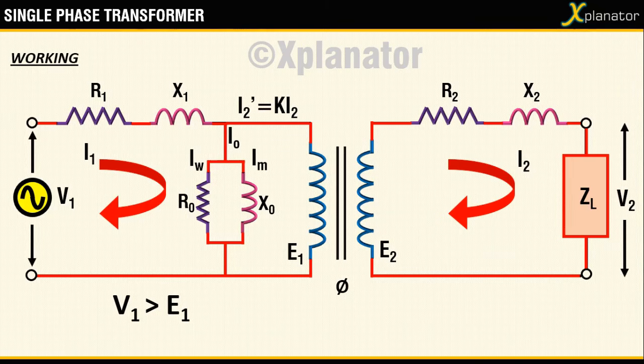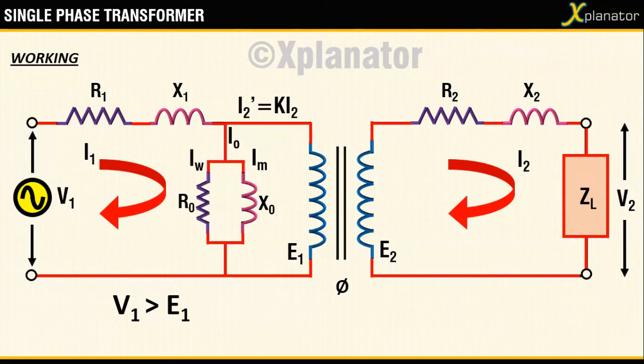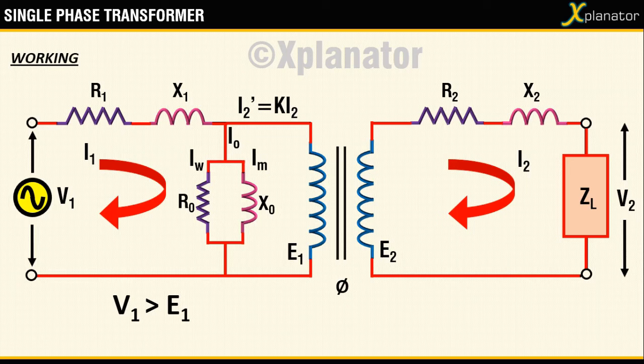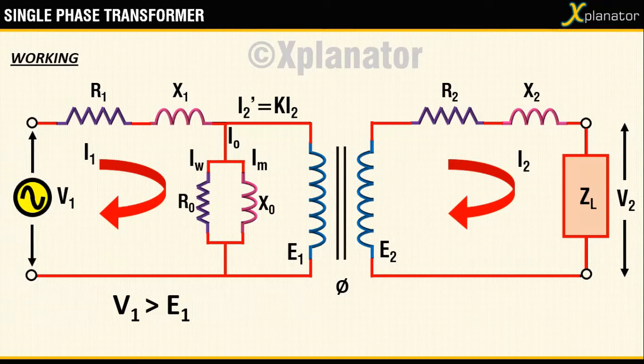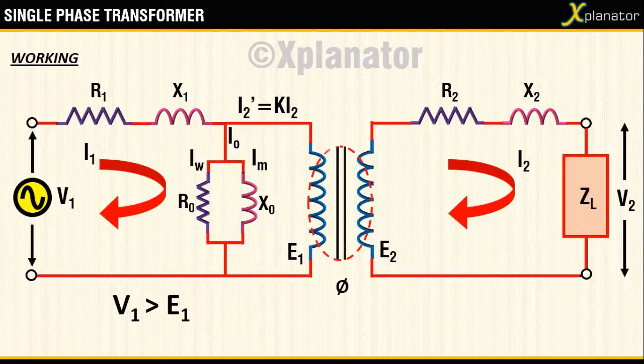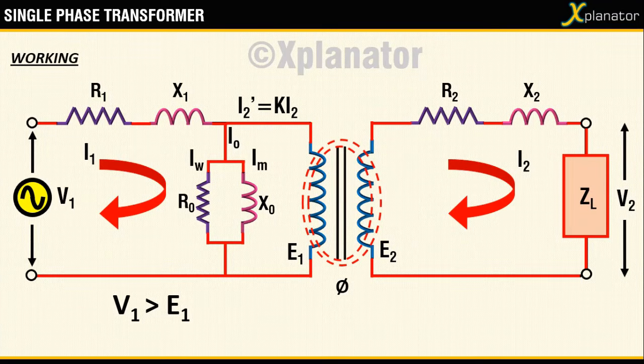Now if secondary current is I2, primary current is Im plus I2 prime which is a higher value than I2. So the flux phi also increases and this ensures that flux in the core is maintained constant.